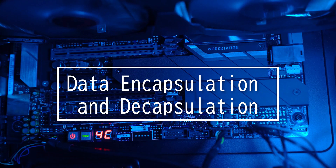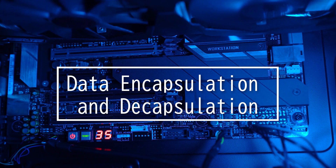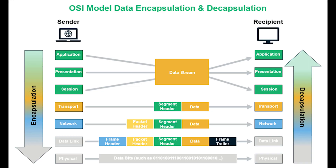This video is on data encapsulation and decapsulation within the OSI model context. As data moves down the OSI model, it is encapsulated with a header added to the beginning and a trailer to the end — kind of like a gacha machine or a pill with stuff inside. Once the data arrives at the receiving host, it moves up the model and is decapsulated as that header and trailer are stripped off.